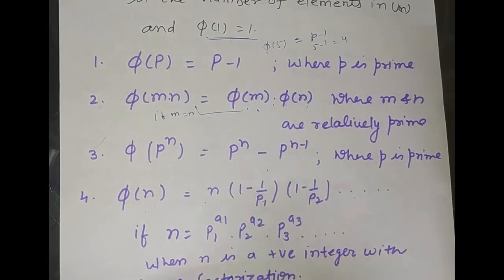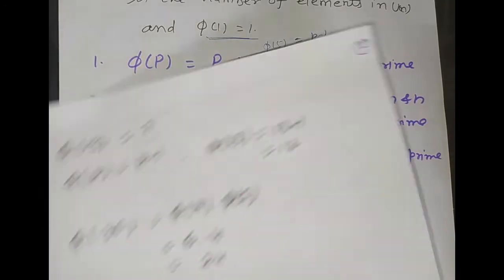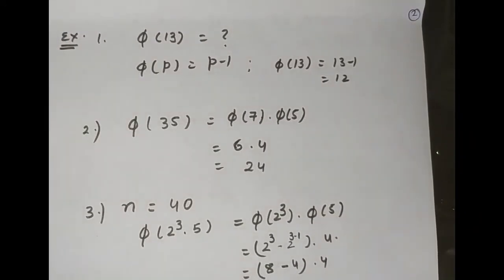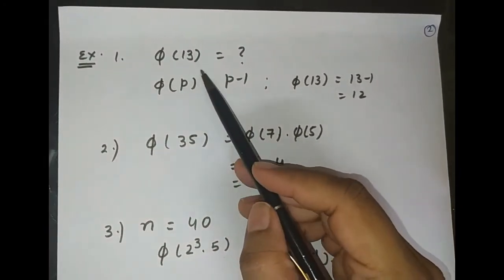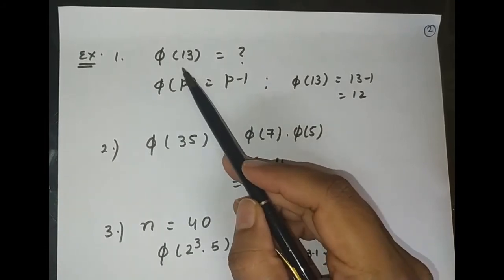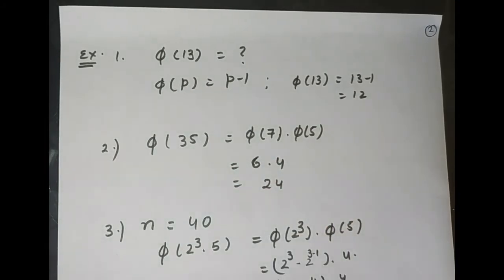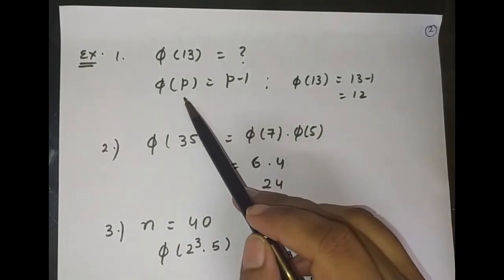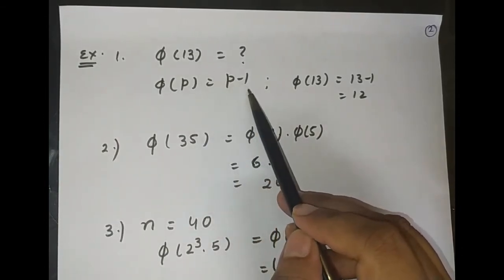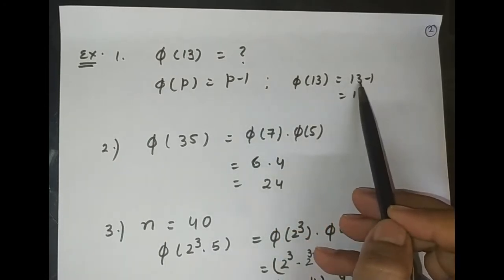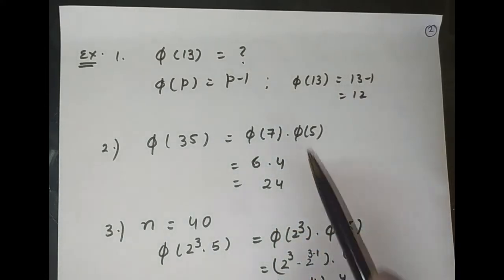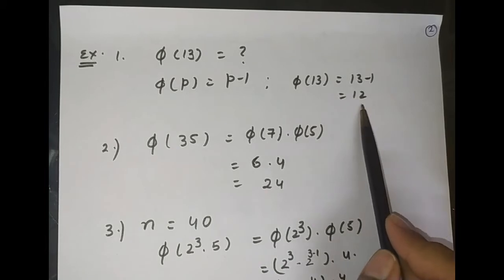Now let's see how to apply these formulas through some examples based on the Euler phi function. First example: φ(13) — 13 is a prime number, so the value is p − 1, that is 13 − 1 = 12.